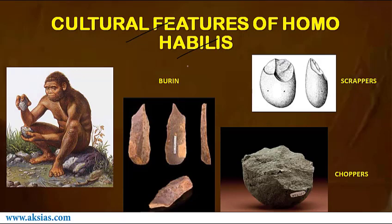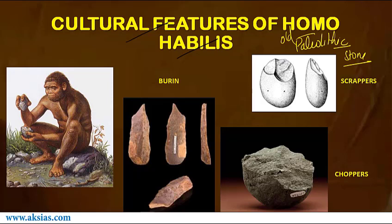Now let us understand the cultural features of Homo habilis. There is evidence that Homo habilis was a tool maker, and traces of tools are found at Olduvai Gorge, East Turkana, and also from South Africa. The Paleolithic culture — Paleo meaning old and lithic meaning stone, i.e., the old stone age — began with the appearance of Homo habilis, who first appeared in the fossil record around 2 million years ago in the lower Pleistocene. For about 1 million years Homo habilis existed with Australopithecus, and hence both were contemporary to each other for some period.